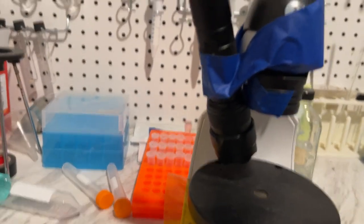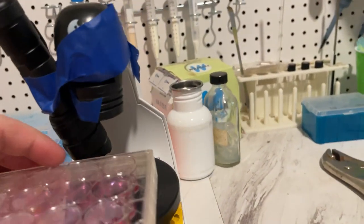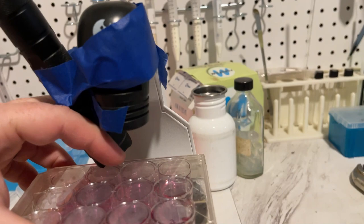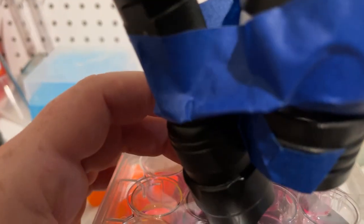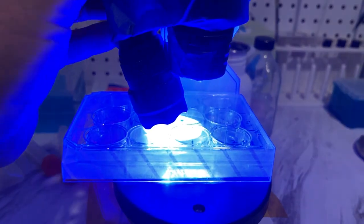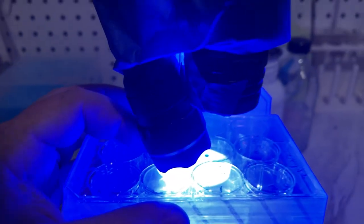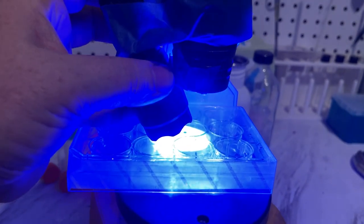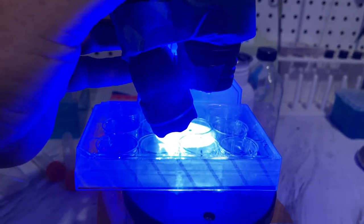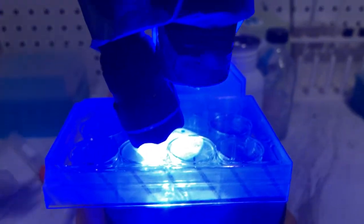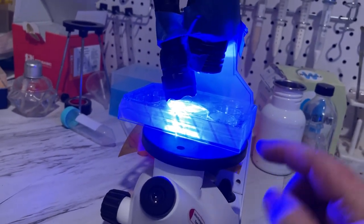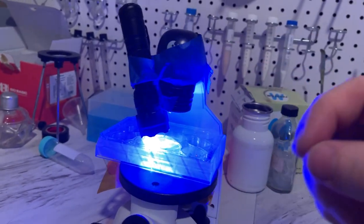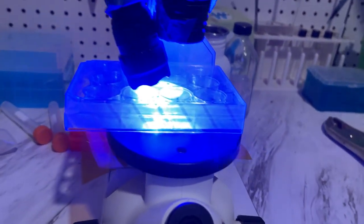Now, what will happen is, the light, the blue light will shine on the cells. The blue light will get filtered out here. But the green light, being made inside the cells by the GFP fluorescence, will still be visible.